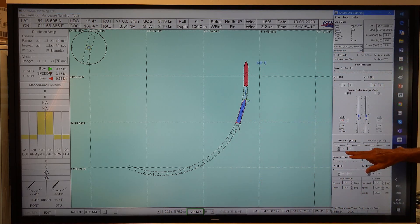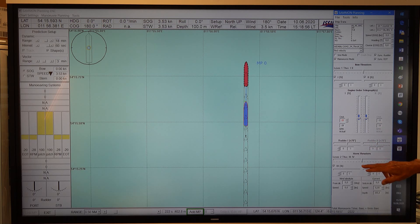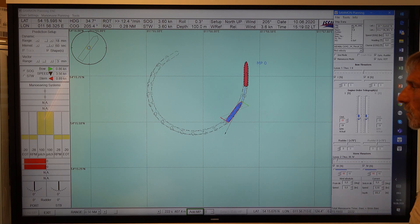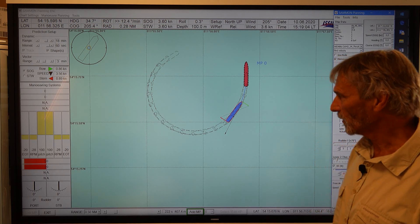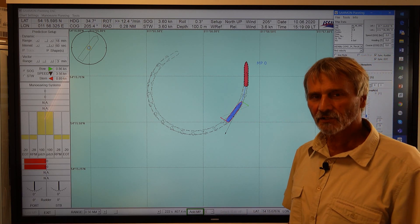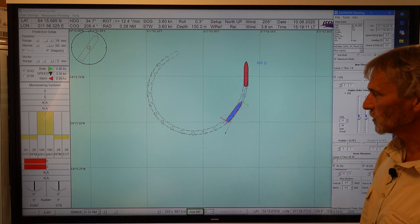And you see the stern thruster is much more effective. And again, the pivot point is located in the ship's center midship position.